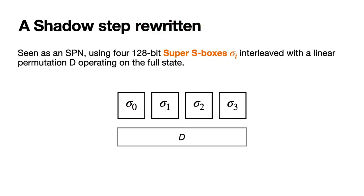What we have now is an SPN structure with four 128-bit SuperS boxes and a linear permutation layer D. The round constant addition after round B is implicitly considered. With this new representation, we can consider two Shadow states that are equal on the last three bundles. After the SuperS boxes, the last three bundles are still equal. Then after the D box, since each bundle is updated with the XOR of the three other bundles, we know that the first bundles are equal.